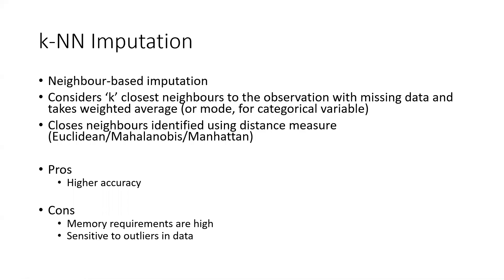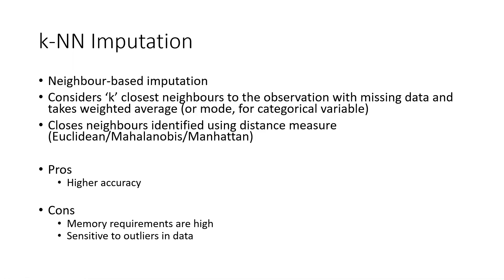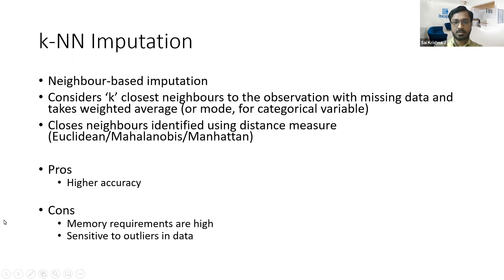A question was raised: since KNN depends on neighbors, if we sort the data in ascending or descending order of different fields, does the output for missing values change? No, sorting does not impact the output of the KNN algorithm. The distance is calculated using Euclidean, Mahalanobis, or Manhattan distance, and no matter what the sort order of the data is, the value of these distance measures will not change. Sorting will not have an impact on the KNN model.